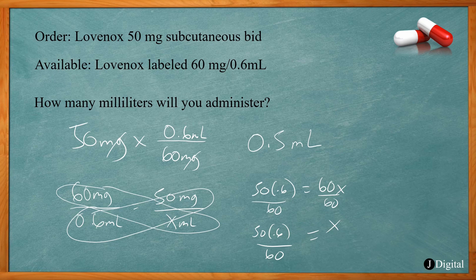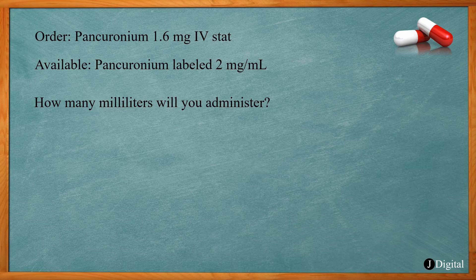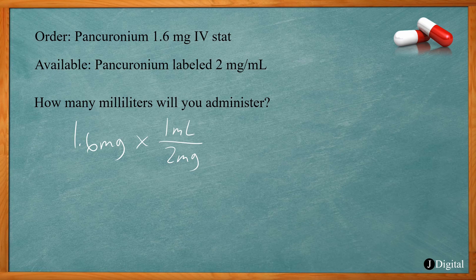In this problem the order is pancuronium 1.6 milligrams IV stat, and we have available 2 milligrams per milliliter. We need 1.6 milligrams; each milliliter gives 2 milligrams. Multiplying out: 1.6 divided by 2 gives 0.8 milliliters, so we need to administer 0.8 milliliters.